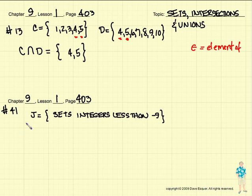So we're looking for the set of integers that are less than negative 9. If we needed to write those, we would probably start with minus infinity, dot, dot, dot. Remember, they have to be integers.